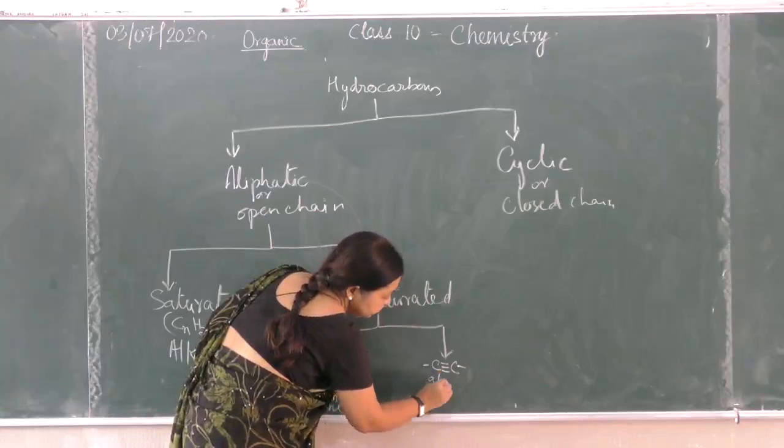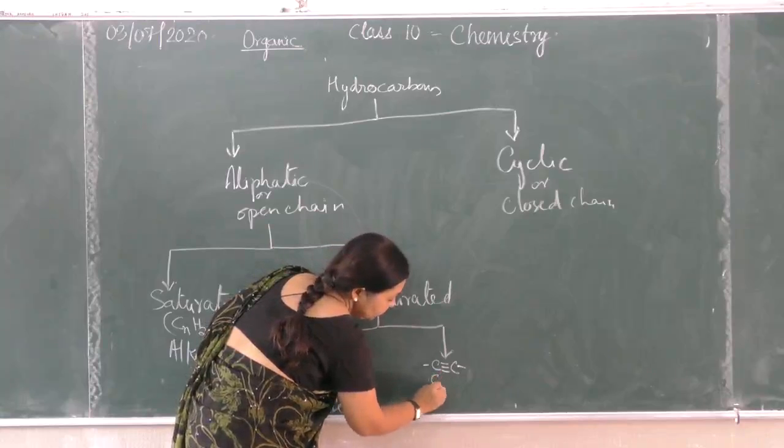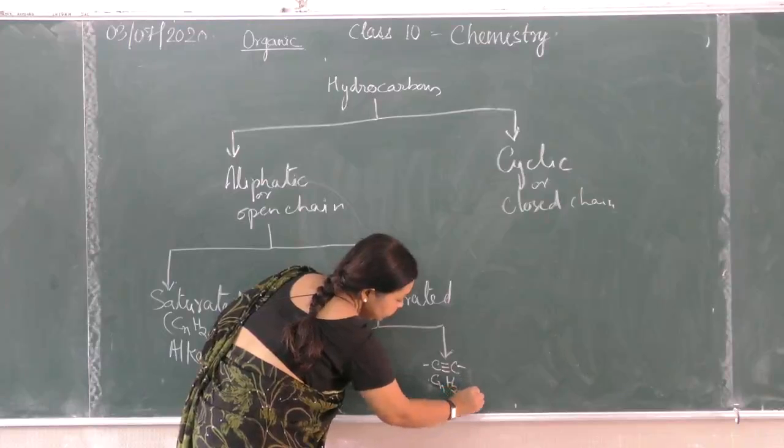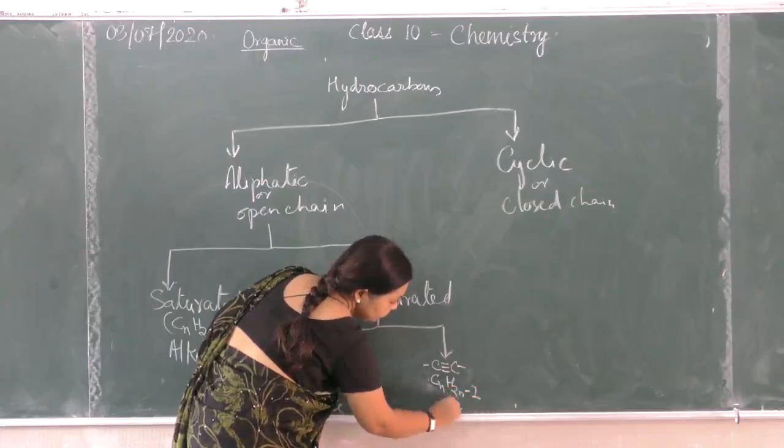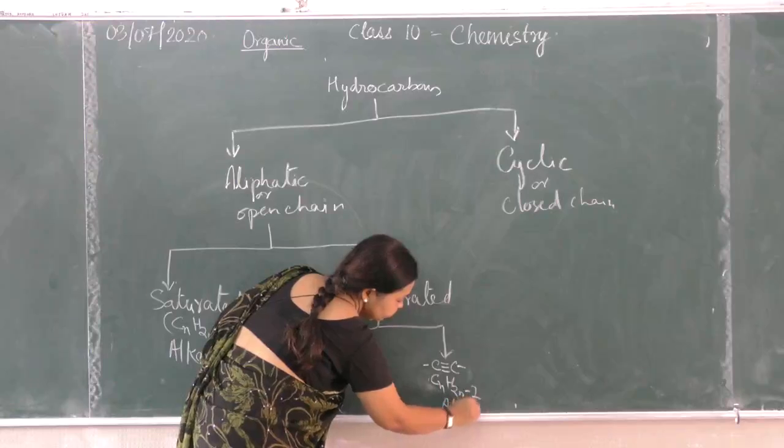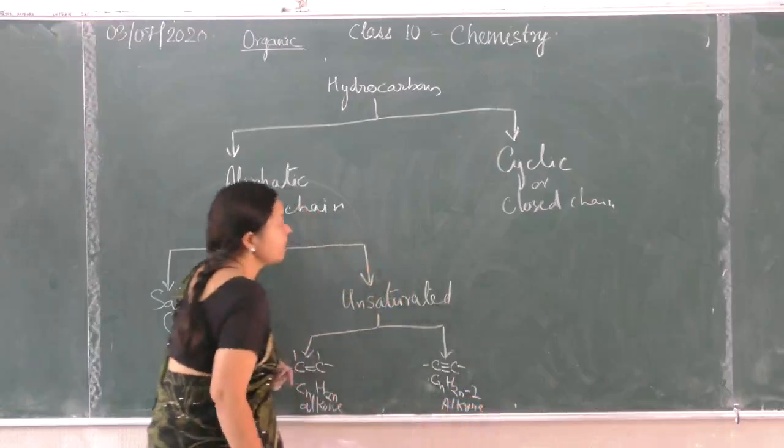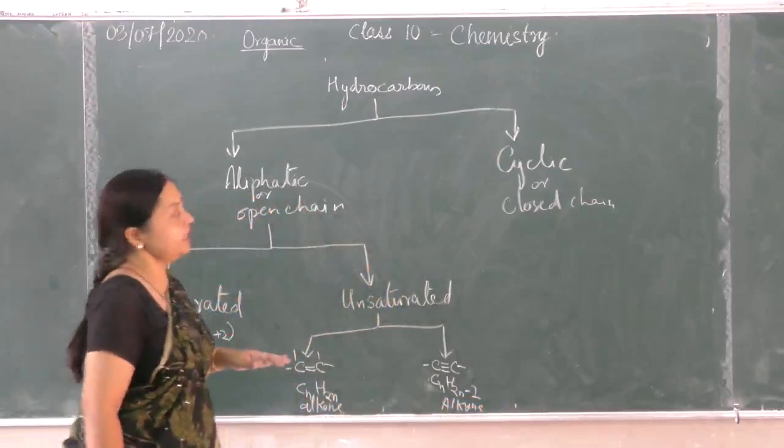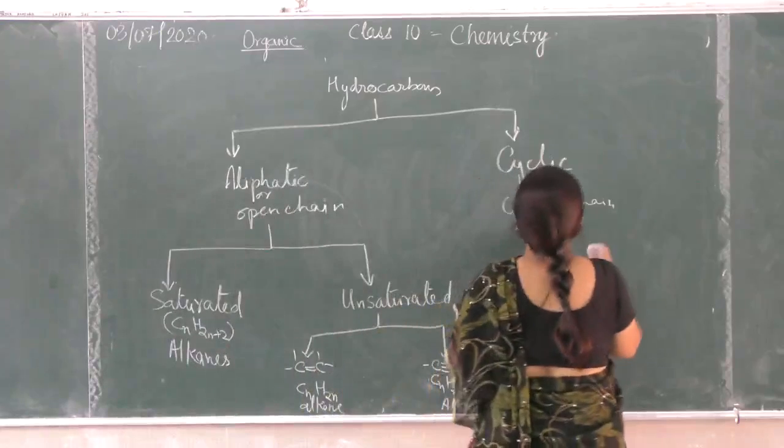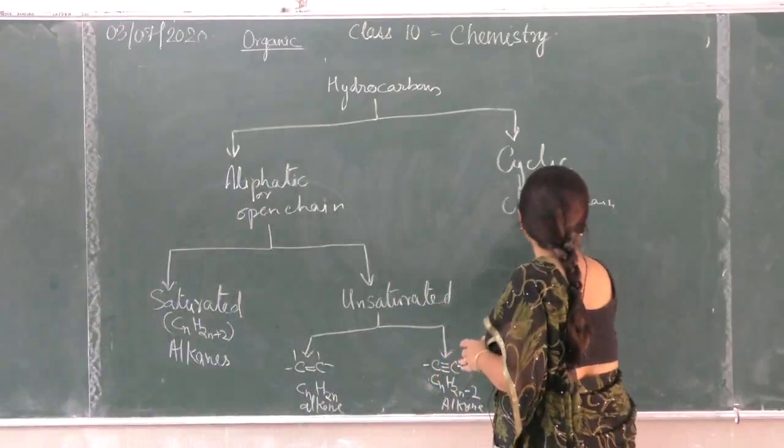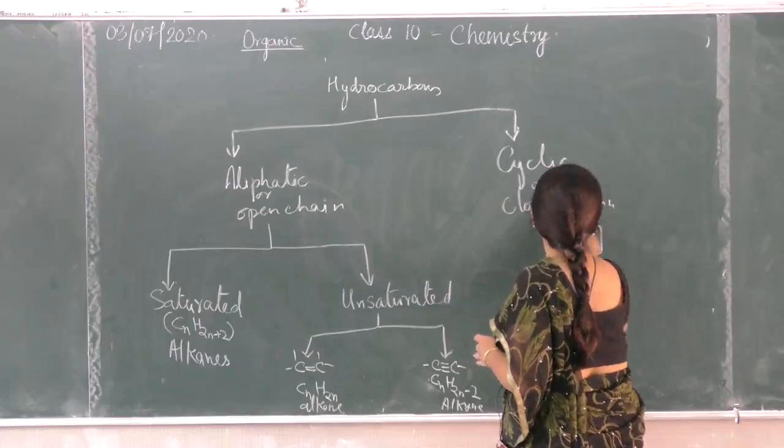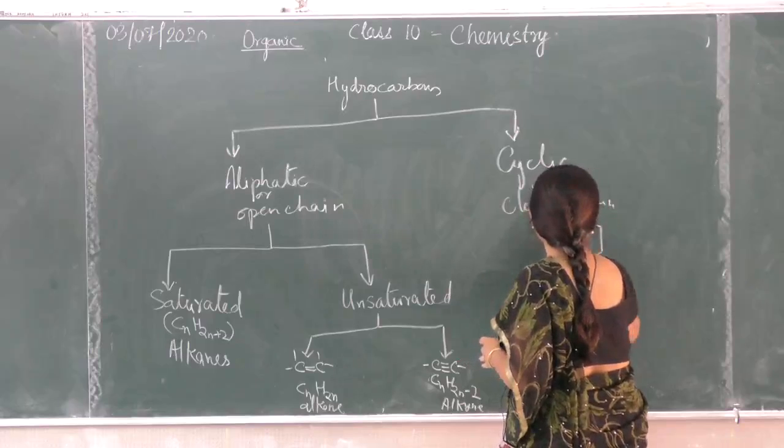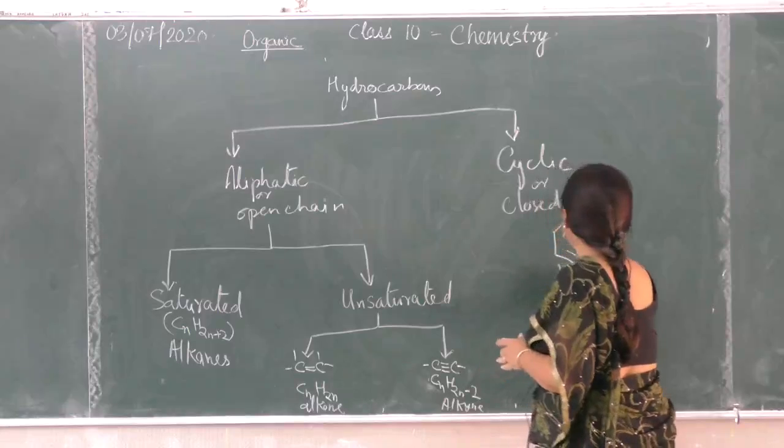Cyclic or closed chain - you remember this one has alternate double bonds. This is called benzene.